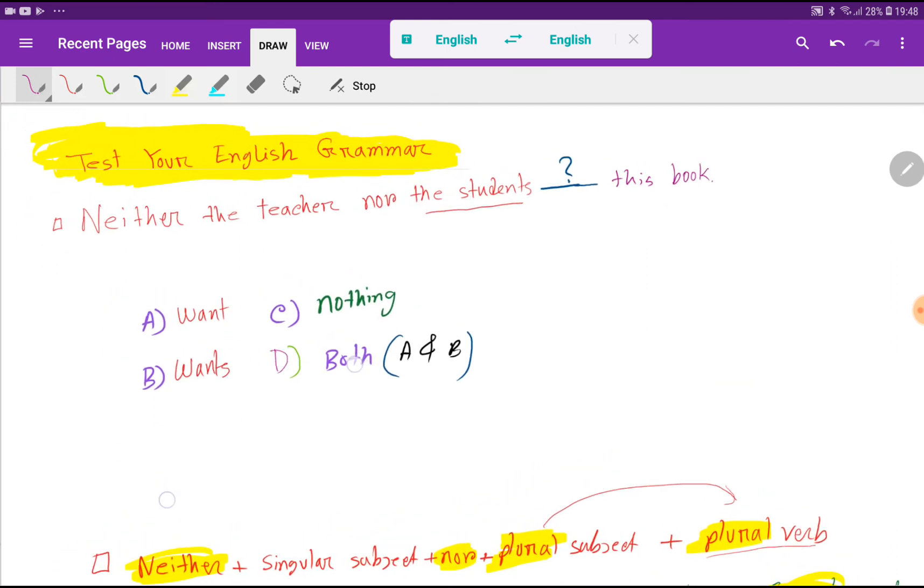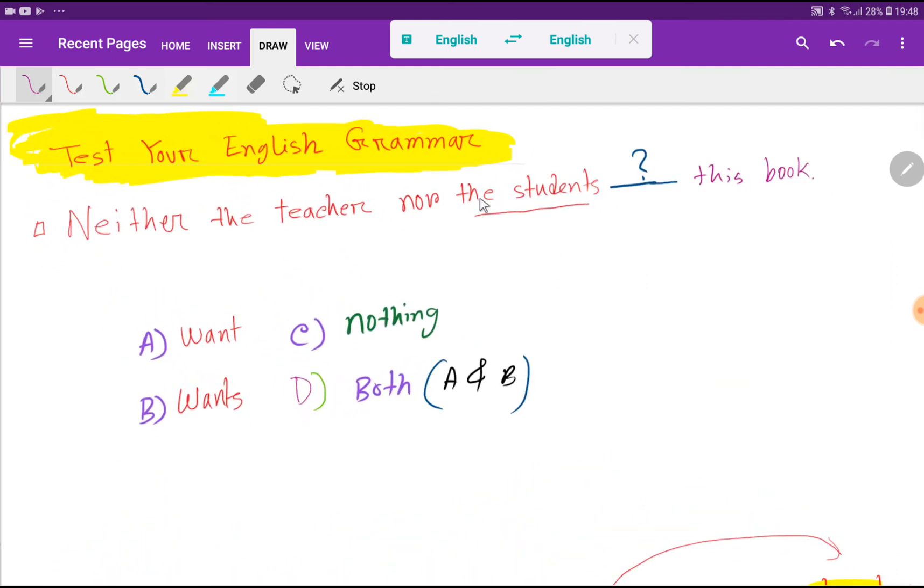Now come to this point. After nor we are using plural noun 'students,' so we have to use plural verb here. We know that if we add 's' with a verb then the verb will be singular, so 'wants' is singular. But here we need plural, so the plural verb will be 'want.' That is option A.